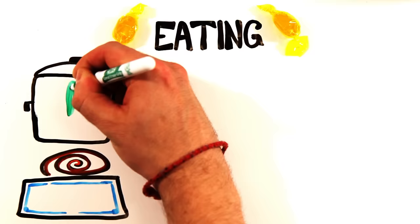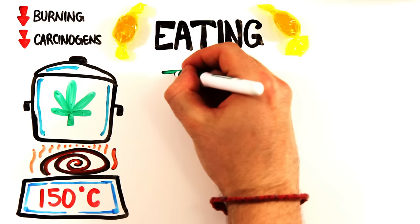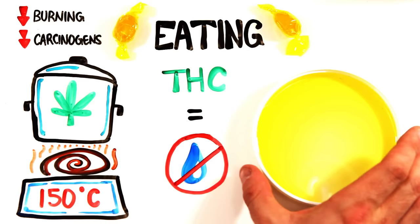But when making edibles, the weed is heated to around 150 degrees Celsius, burning less of the actual plant and minimizing carcinogens. THC is lipophilic, not water soluble, so the activated THC must be dissolved into something fatty like oil or butter.